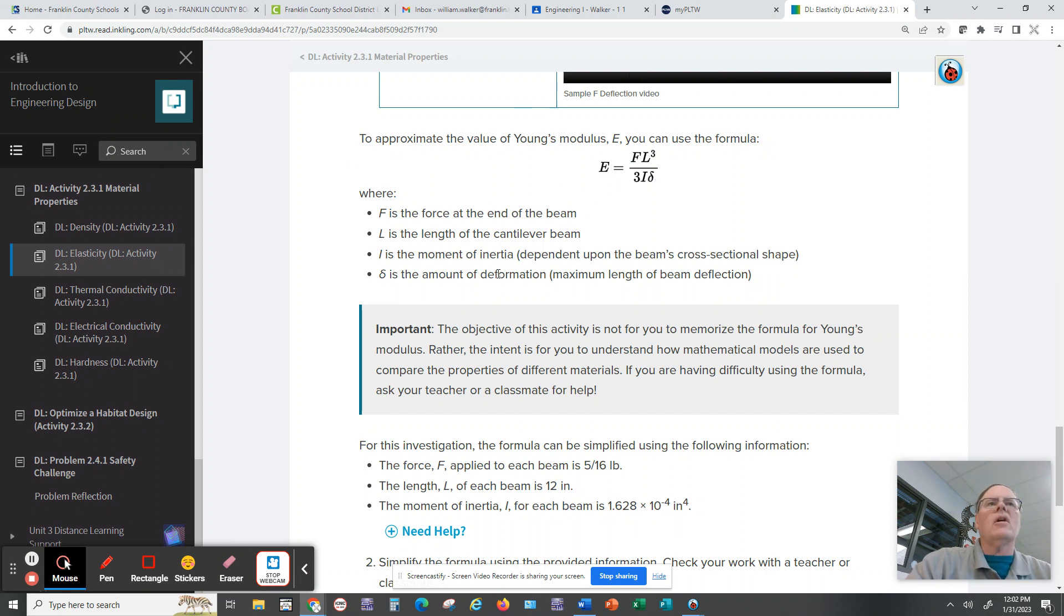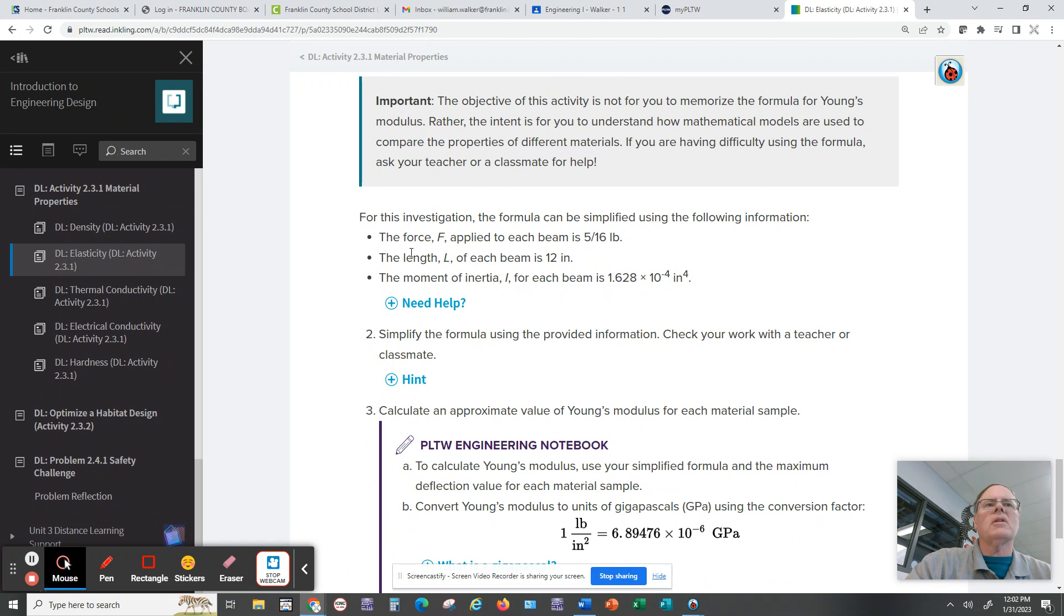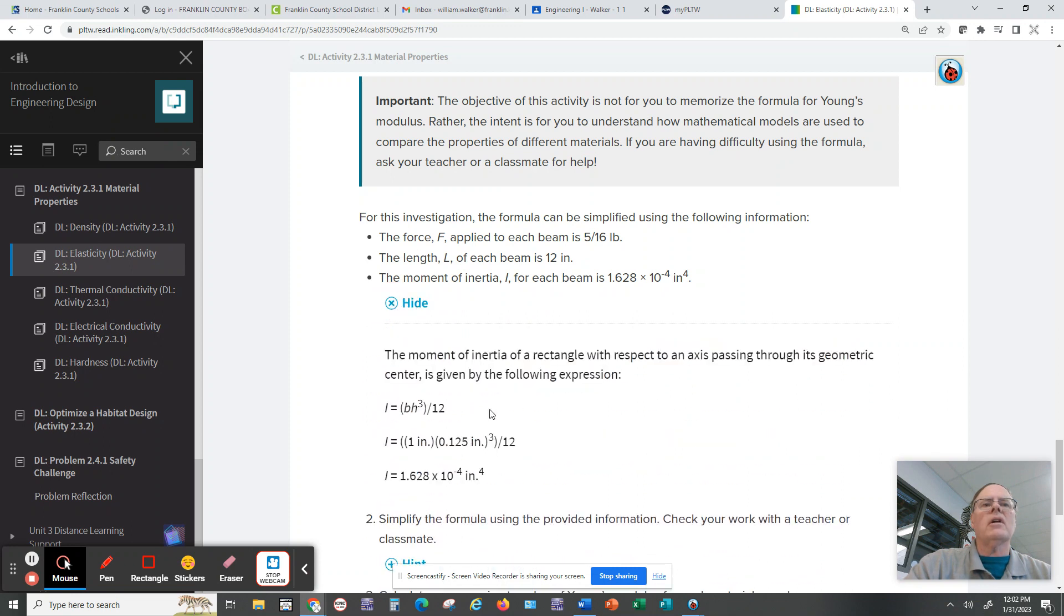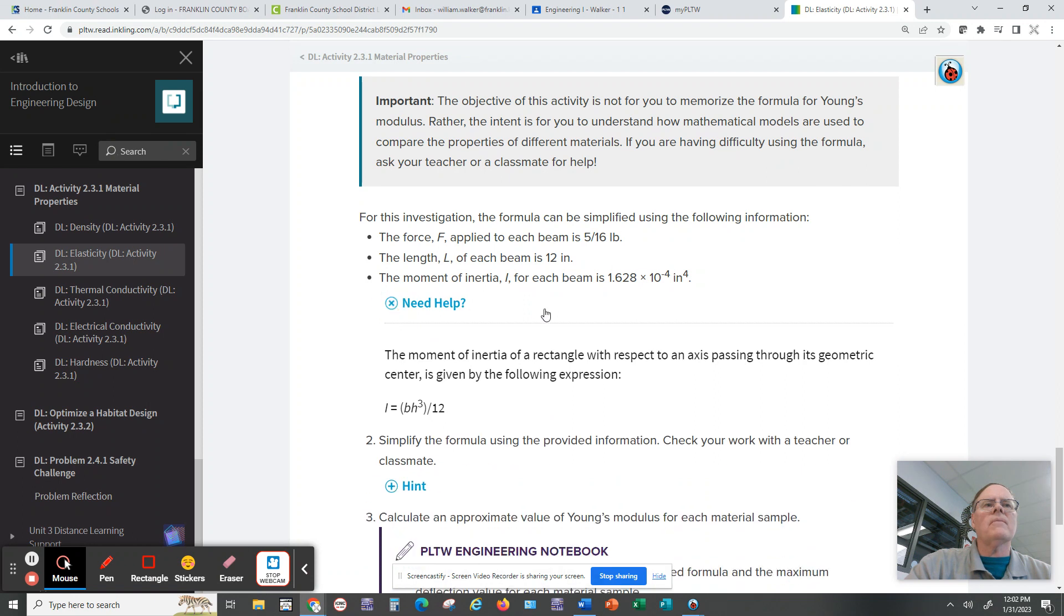If you look down here for all six of these cases, they're going to be telling you the force is 5/16, the length is 12 inches, the moment of inertia is 1.628 times 10 to the negative four. We're going to look in a moment how we would turn that into just a decimal. If you need more help, you can always click on the need help, and it shows you how things are calculated.